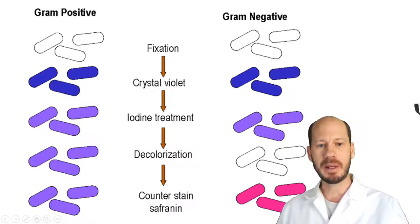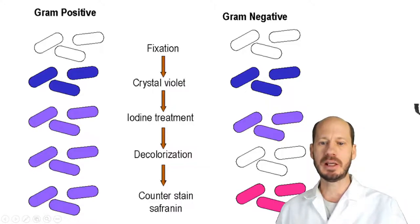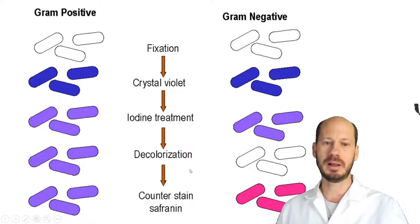The next step is a counter stain, which is usually done with safranine. And that safranine is just to color the cells that were able to lose the stain from the decolorization steps.